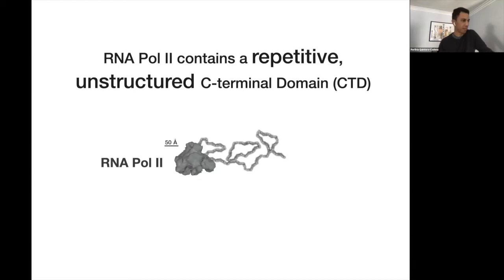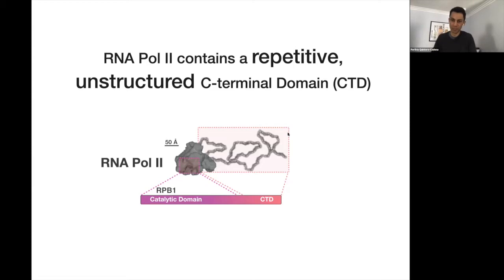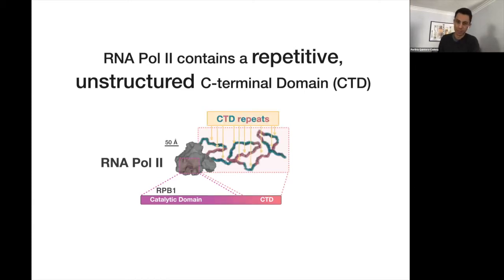In the back, I'm showing you what is known as the C-terminal domain of the main catalytic subunit, RPB1. One of the reasons this domain is really interesting is that it is highly unstructured — the distribution of shapes it can take is quite wide compared to the rest of the enzyme. One reason for this is that it is very repetitive.